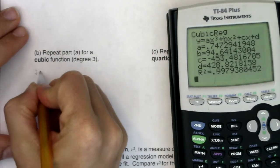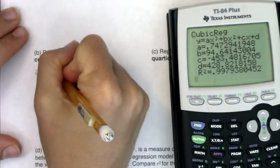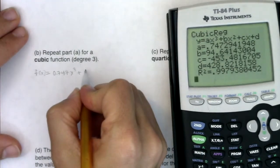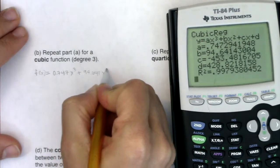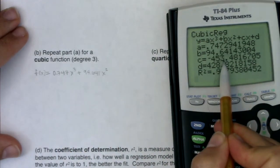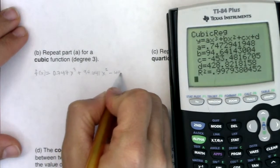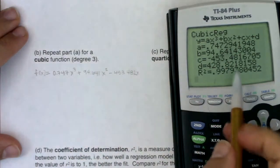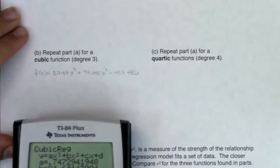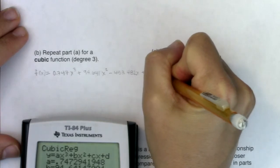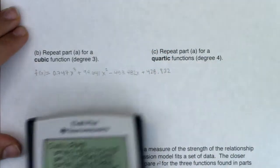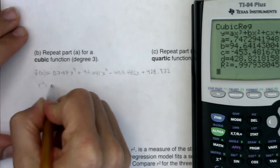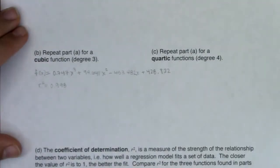So f of X would equal 0.747 X cubed plus 94.641 X squared minus 453.482 X plus 428.822. Let me keep track that for this one, R squared was 0.998. This was the cubic model.